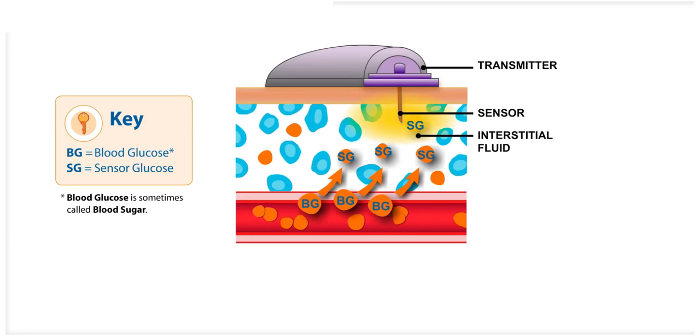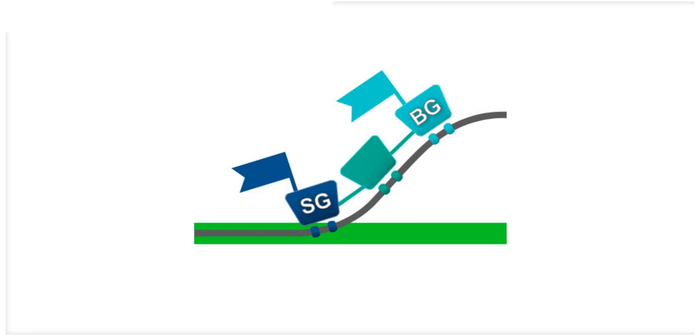Your glucose meter and the sensor measure glucose levels in two different areas. Because glucose is always moving between these two areas, blood glucose or BG meter readings and sensor glucose or SG readings from your sensor will rarely be exactly the same. This is normal and should be expected. This difference between SG and BG is OK.